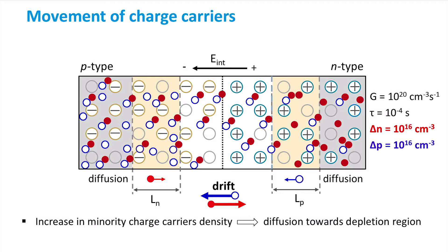In general, only the photogenerated minority charge carriers that are within the diffusion length from the depletion region edge will be drifted across the depletion region. Ln is the diffusion length of electrons in the P-type region and Lp is the diffusion length of holes in the N-type region. Minority carriers generated far away from the edges of the depletion region will recombine before reaching it.